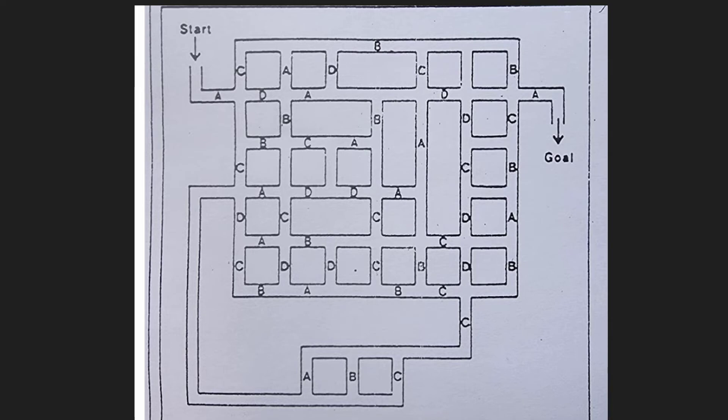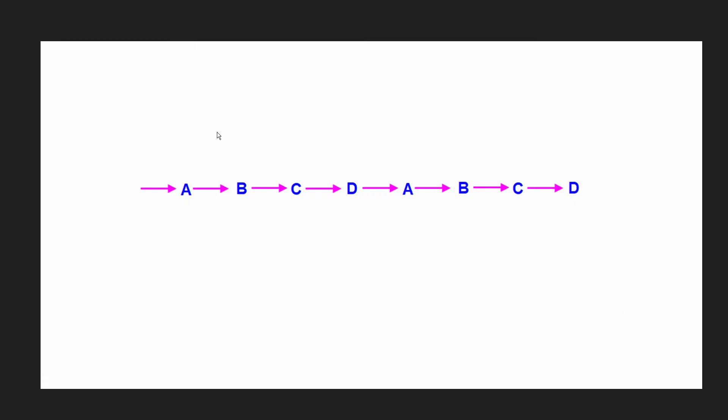So here's the rules of the maze essentially. You probably guessed, but essentially you go through a letter A, then you have to go through a letter B, you have to go through a C, you have to go through a D, and then after a D it repeats. You have to go back through an A, a B, a C, and a D. You have to continue going in that progression.